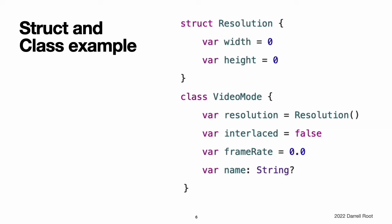Here is an example of a structure definition and a class definition. The example defines a new structure called Resolution to describe a pixel-based display resolution. The structure has two stored properties called width and height. Stored properties are constants or variables that are bundled up and stored as part of the structure or class. These two properties are inferred to be of type Int by setting them to an initial integer value of zero.